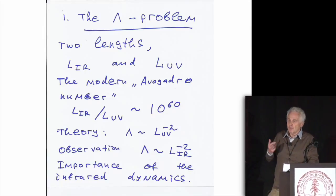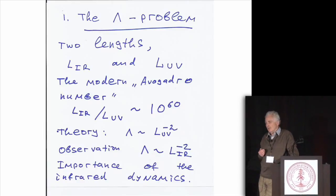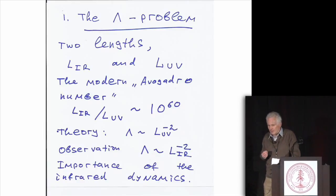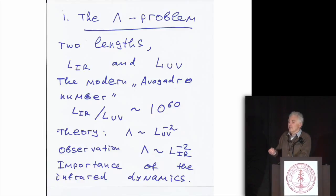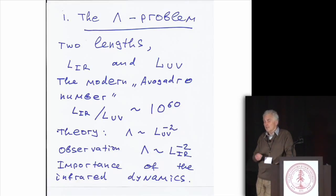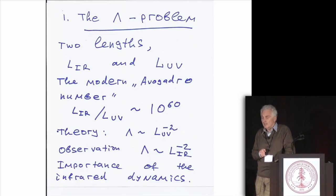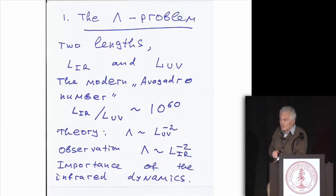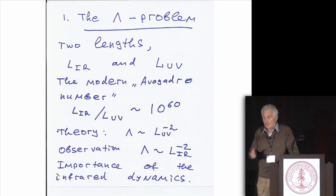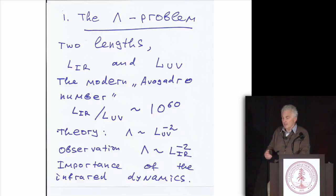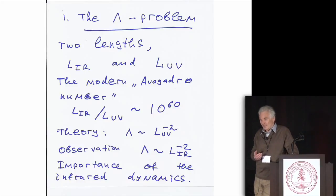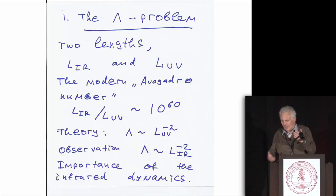The first problem is the cosmological constant, which interests me for a very long time. The problem is that you have the infrared and ultraviolet scales, and the ratio is huge. There's a small discrepancy: theory tells you it's the UV scale which defines the cosmological constant, observation tells you it's the IR scale. So something has to be done.